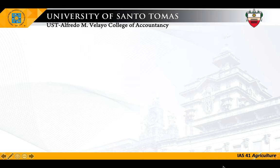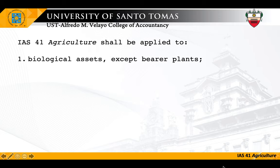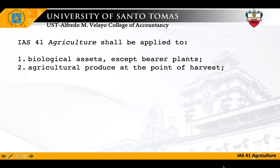The scope of IAS 41 Agriculture: this standard shall be applied to account for, number one, biological assets except bearer plants. Later we will discuss what biological assets and bearer plants are, and why bearer plants are scoped out from IAS 41. Number two, agricultural produce at the point of harvest. Agricultural produce are the harvested produce of biological assets, but IAS 41 will only be applied to agricultural produce up to the point of harvest. This standard does not deal with the processing of agricultural produce after harvest. For example, the milling of palay into rice, although considered an agricultural activity, is no longer covered by this standard — another standard will apply for that process. Government grants related to biological assets are also under IAS 41.